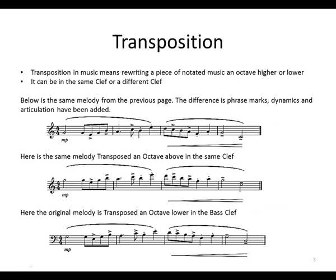Transposition — what is transposition? Transposition in music means rewriting a piece of notated music an octave higher or lower. It can also be in the same clef or a different clef. So the music is rewritten either an octave higher or an octave lower, and it can be in the same clef or a different clef.